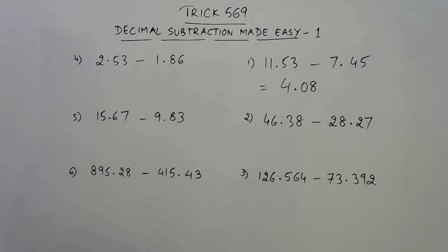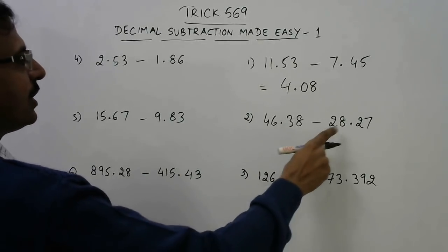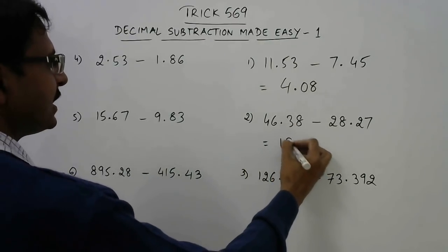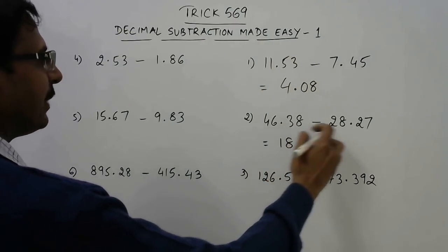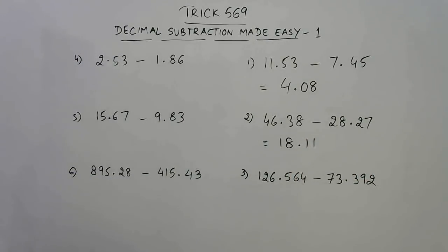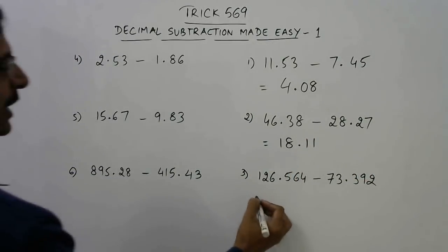Likewise, 46 minus 28, the difference is 18. And 38 minus 27, the difference is 11. So 18 point 11.